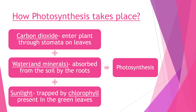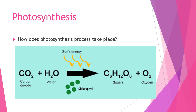In the process of photosynthesis, carbon dioxide enters the plant through the stomata on the leaves, water and minerals are absorbed from the soil by the roots, and sunlight is trapped by the chlorophyll in the green leaves. Together, all these are used by the plant to make their own food through photosynthesis. So photosynthesis is the process by which green plants make their own food in their green leaves with the help of carbon dioxide and water, in the presence of sunlight and chlorophyll, producing food as simple sugar called glucose, along with oxygen used by us for breathing.